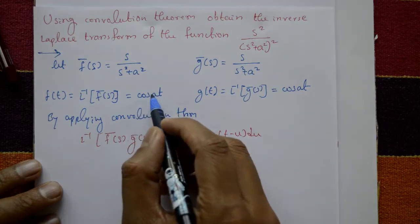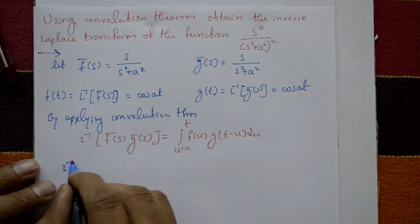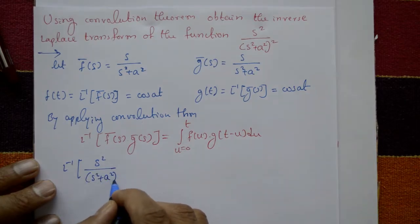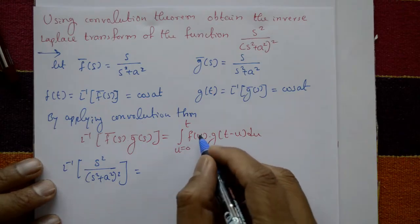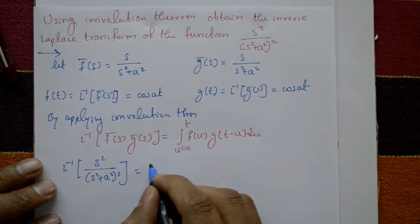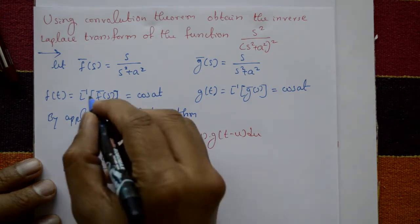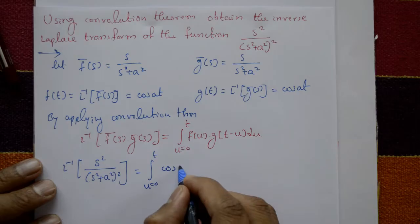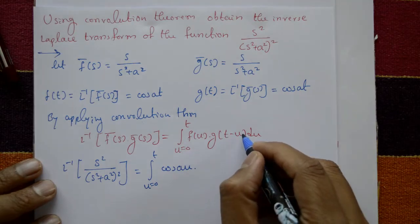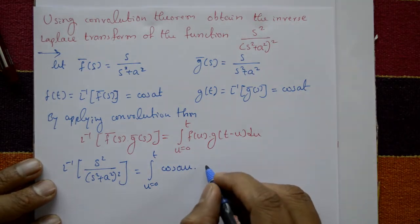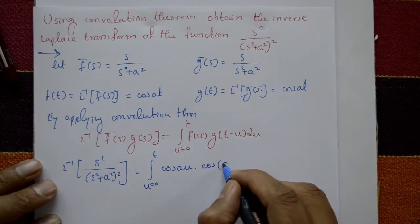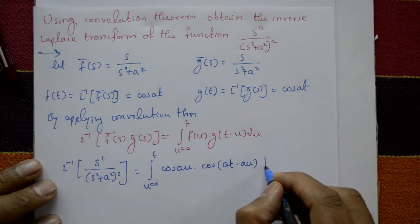So the inverse of s² upon (s² + a²) whole square equals the integral from u = 0 to t of f(u)·g(t − u) du. Here f(u) = cos(au) and g(t − u) = cos(a(t − u)).